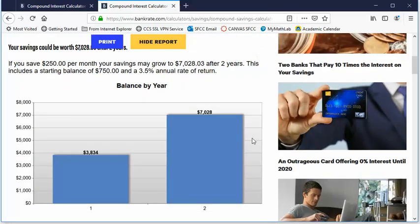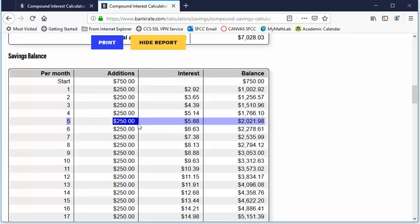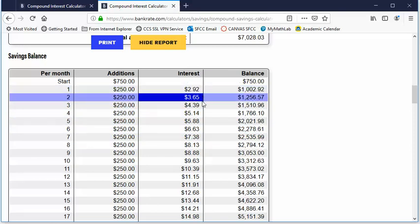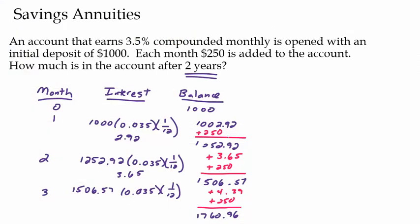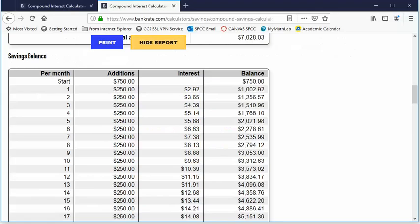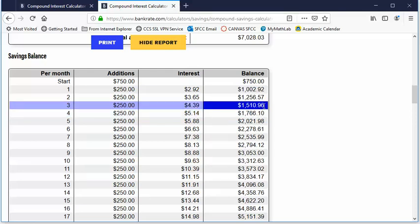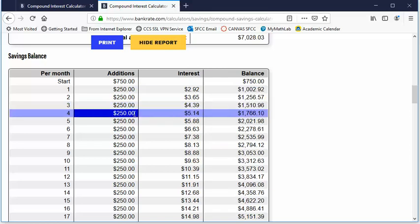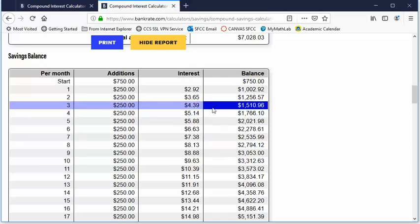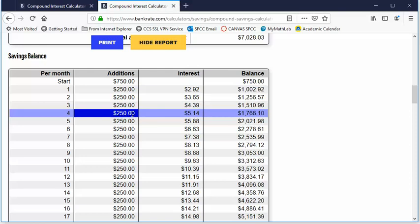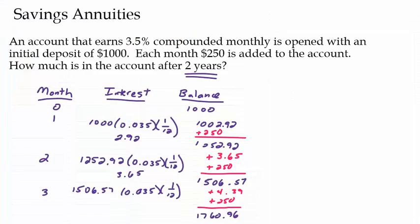Now, if we go view report and we scroll down, it's going to show us basically what we were doing on the other page. So it's got the interest, $2.92, $3.65, $4.39. Let's look at ours. $2.92, $3.65, $4.39. Perfect. And then we had $1,760.96. Let's see what they have over here, $1,760. Now, they've got this $1,510. That was before you added in the $250. So if you take $1,510 and add in the $250, that would be $1,760.96. So that's exactly what we had right here. They just haven't added in the $250 yet in their chart.